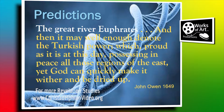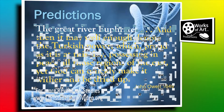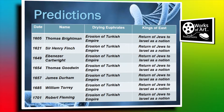We'll look at the River Euphrates. This is John Owen - not Brother John Owen, because it's 1649 and I don't think he's that old. He says of the Great River Euphrates, it may well enough denote the Turkish power, which, proud as it is today, possessing in peace all those regions of the East, yet God can quickly make it wither and be dried up. He knew exactly what the drying up of the Euphrates meant, and he was an awful long time before it happened. We see that as being fulfilled in the First World War - 1649 is a long way before that.